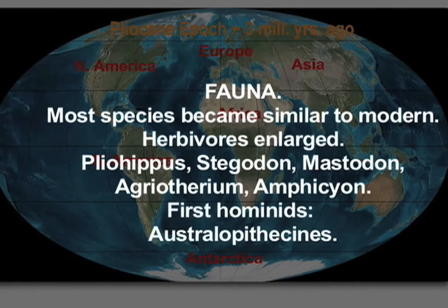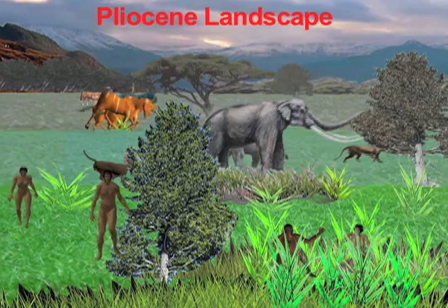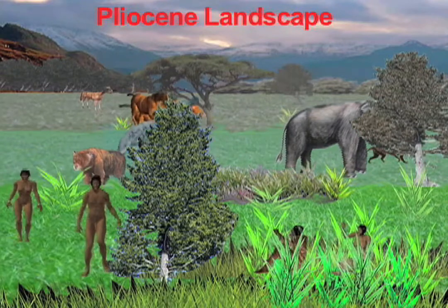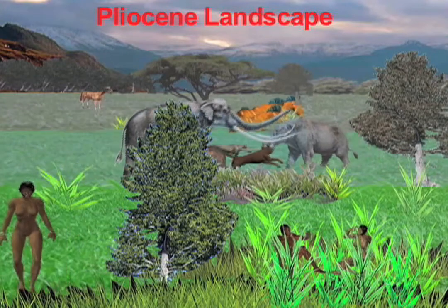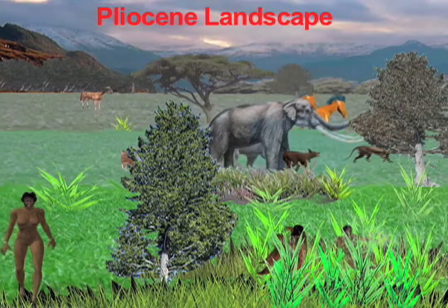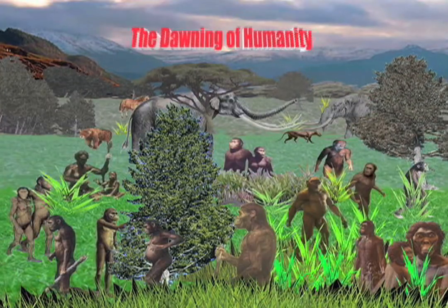Fauna: most species became similar to modern. Herbivores enlarged — Cliohippus, Stegodon, Mastodon, Agriotherium, Amphicyon. First hominids: Australopithecines.